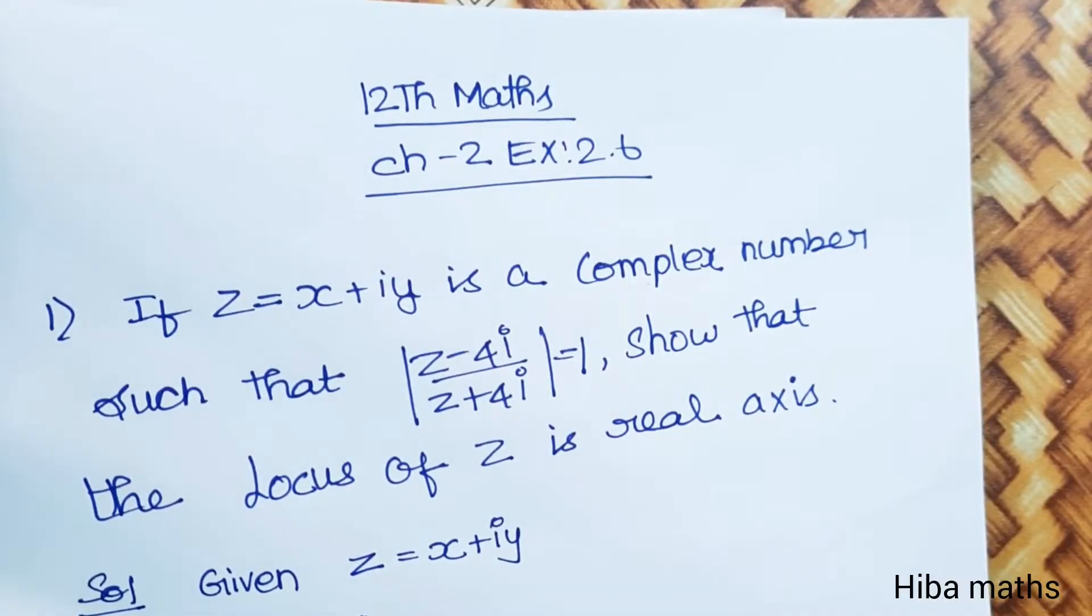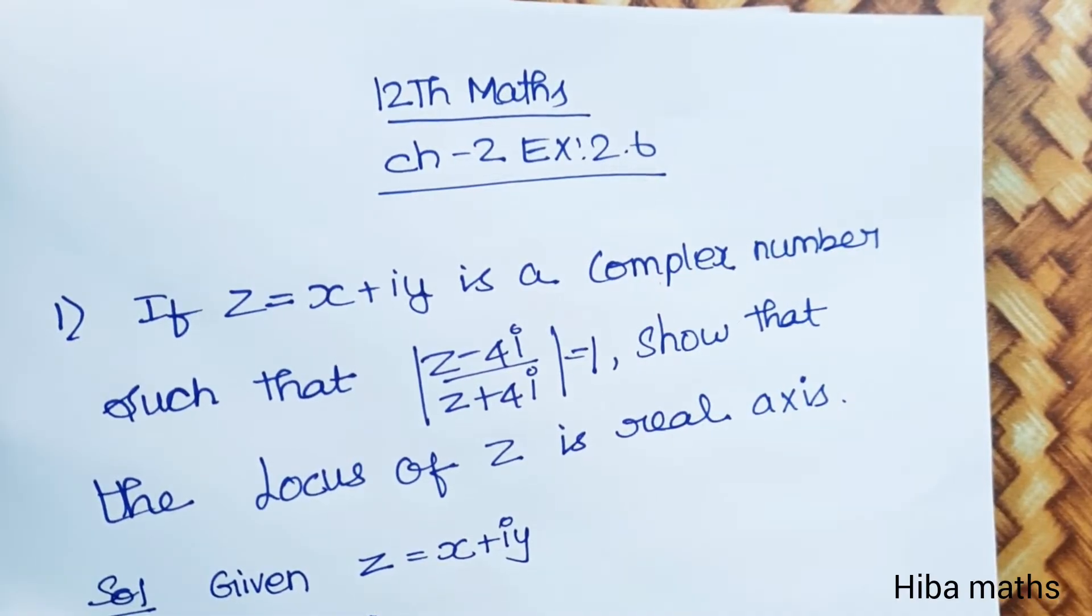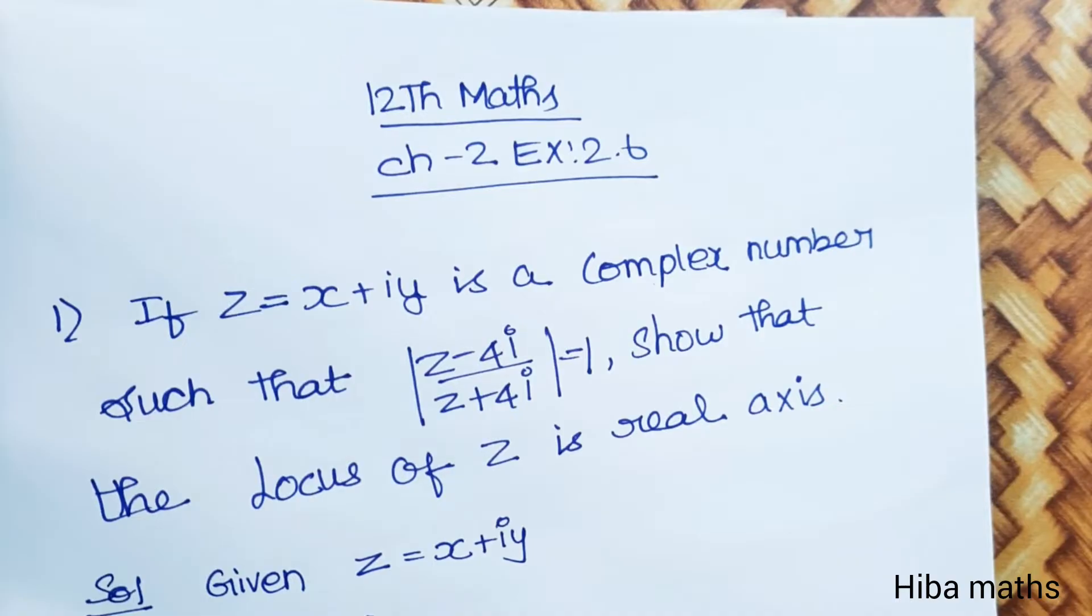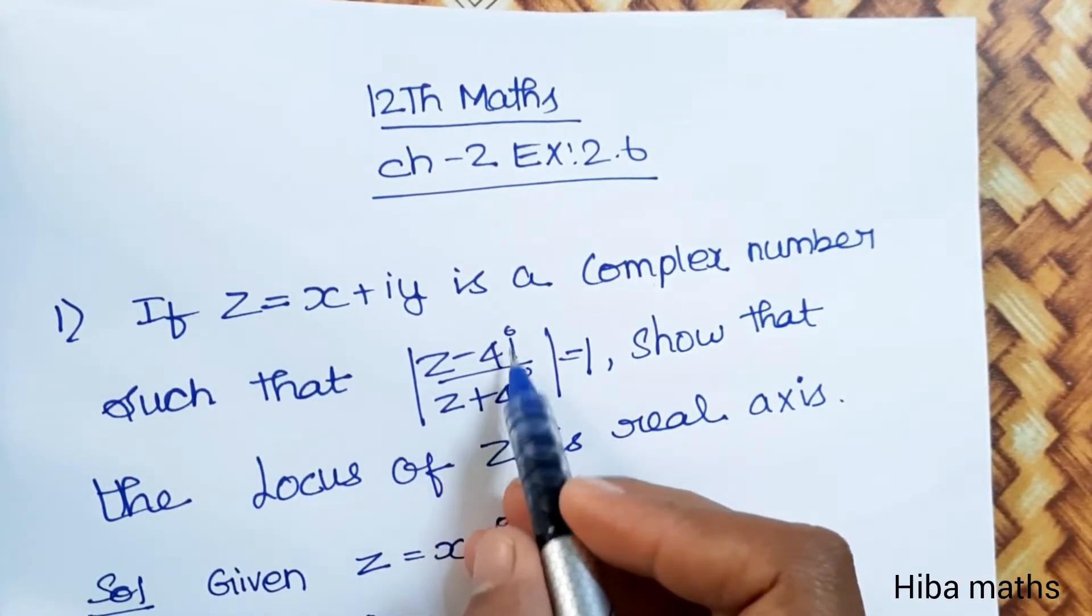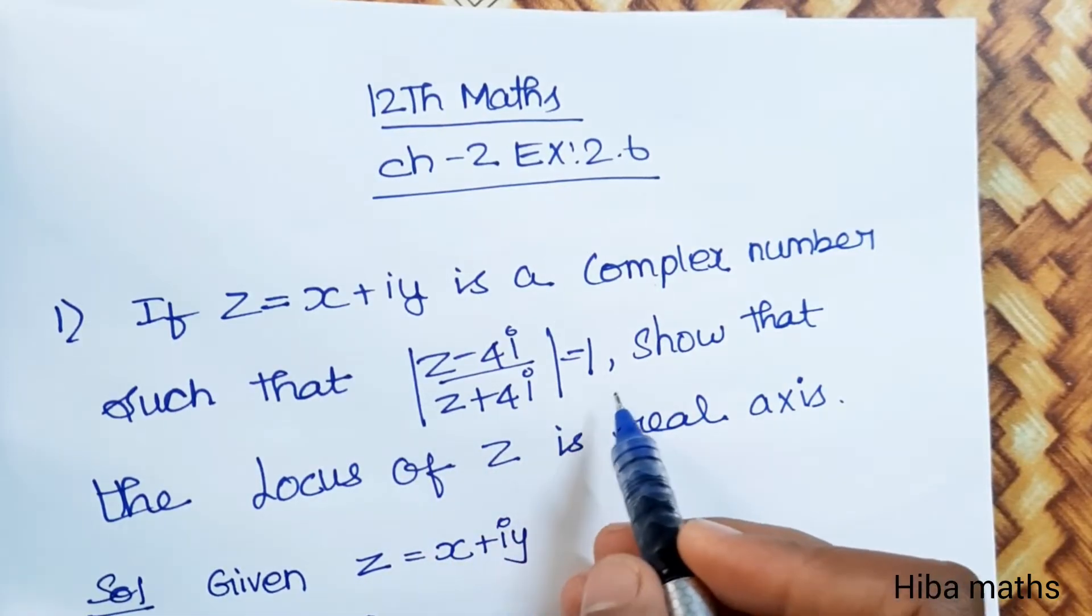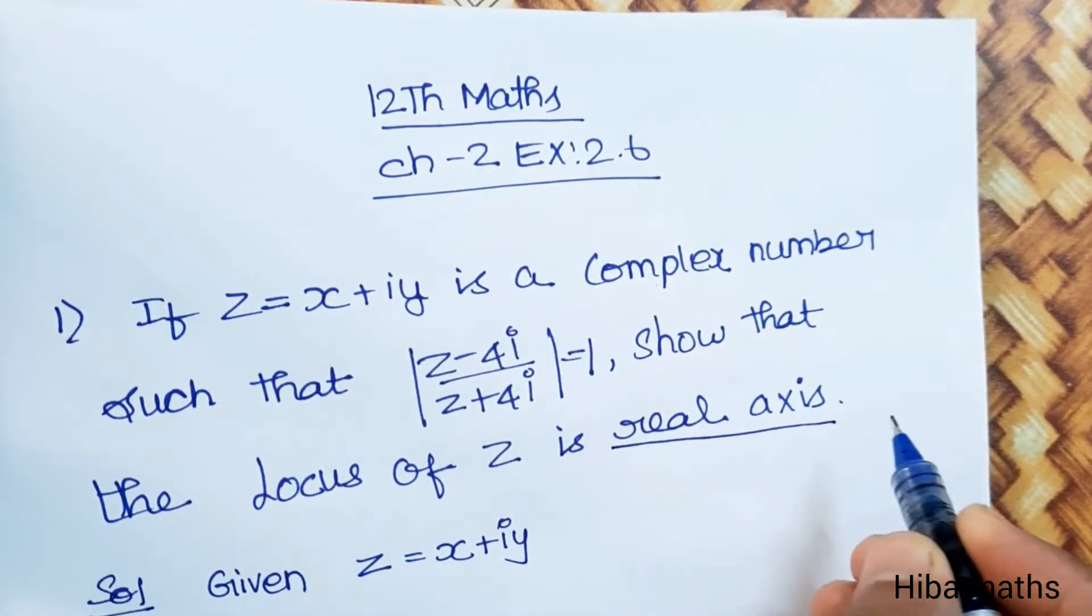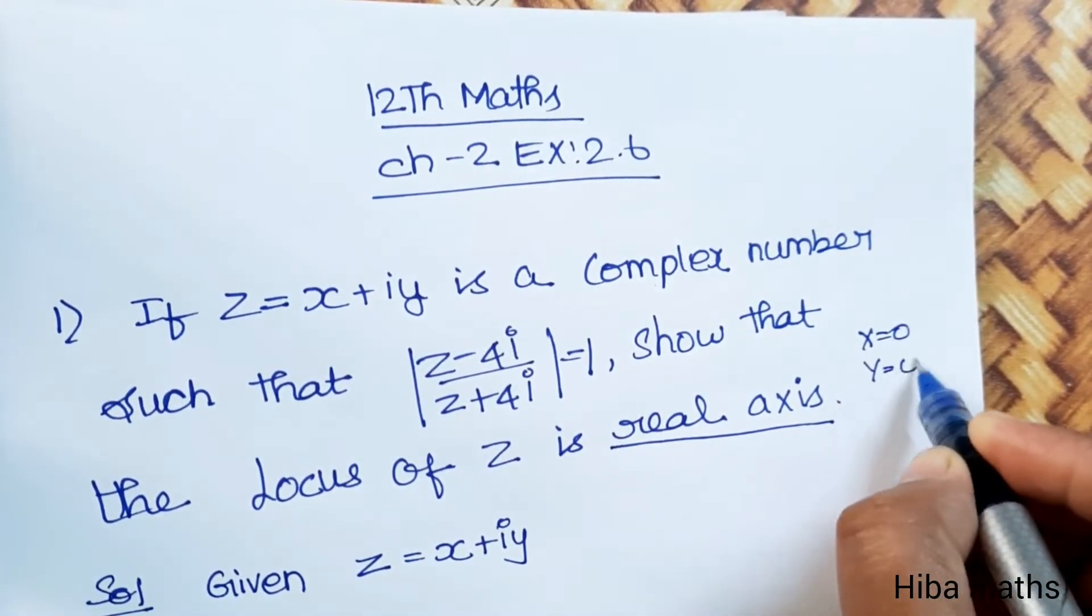Hello students, welcome to Hiba Maths, 12th Standard Maths, Chapter 2, Exercise 2.6. First question: If Z equals X plus iY is a complex number such that Z minus 4i divided by Z plus 4i equals 1, show that the locus of Z is the real axis. Real axis means Y equals 0.